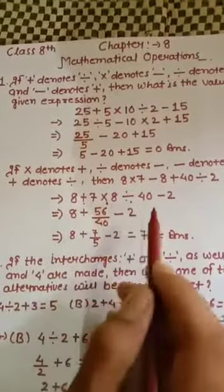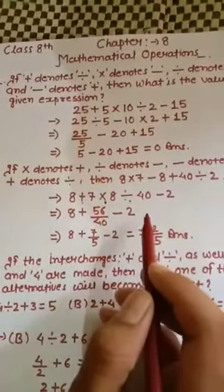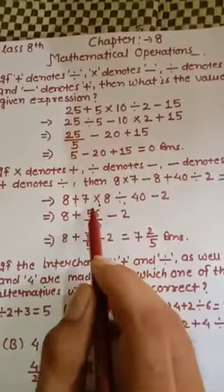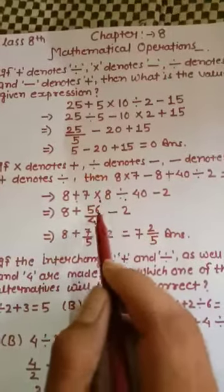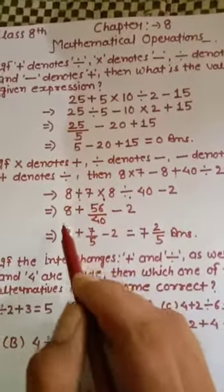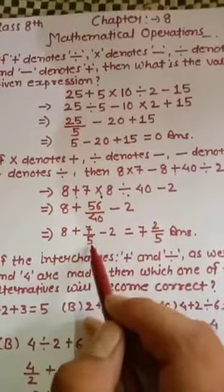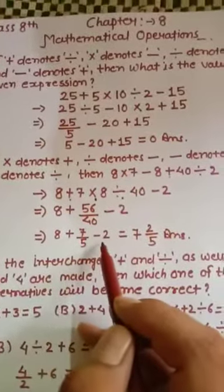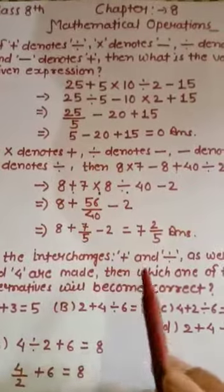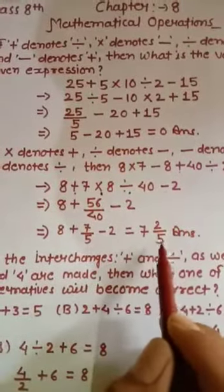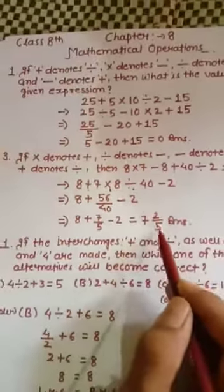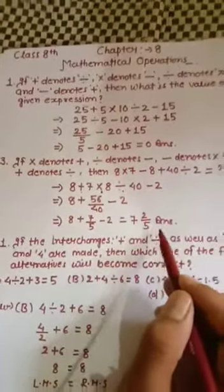First, we multiply: 8 multiply 7 gives 56, and 40 divided by 2 gives 20, so it becomes 56 by 40 — after simplifying, that is 7 by 5. Adding 8 to 7/5 and subtracting 2, we get 37 by 5. Dividing, it becomes the mixed fraction 7 whole 2 by 5 as the answer.